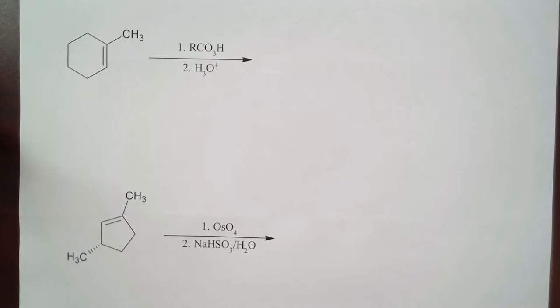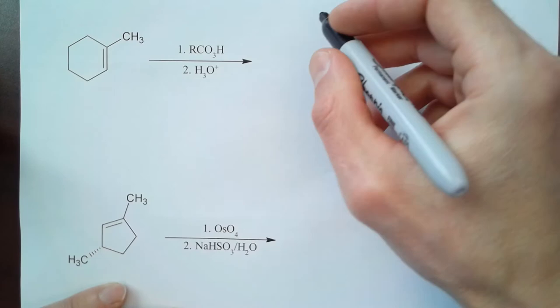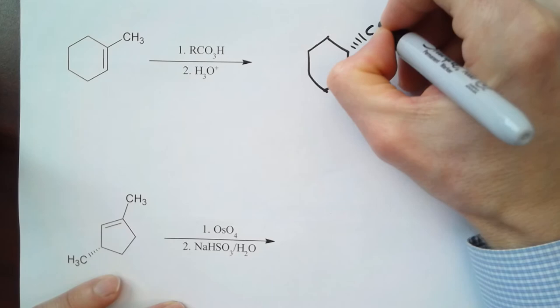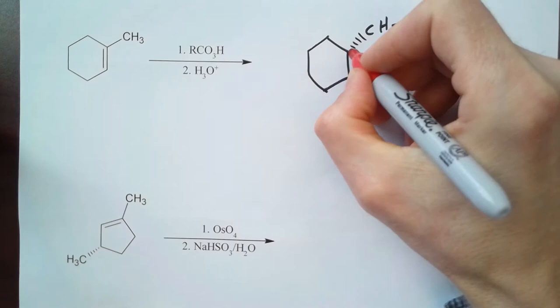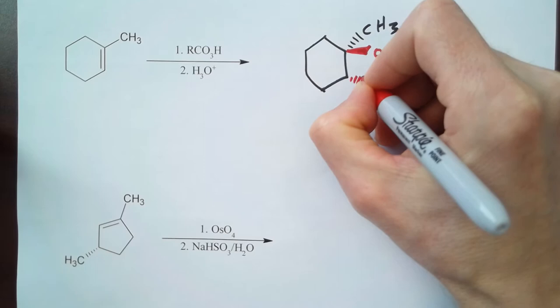So let's just draw the product here. So a trans diol is going to put an alcohol on both of the—this carbon and that carbon—but they're going to be opposite. Now one of them is going to go into the plane of the paper and the other is going to go out of the plane of the paper. So if I go ahead and put that methyl group into the background, then one of these alcohols is going to come out in the foreground and the other alcohol is going to have to be in the background. So this one will be in the background.